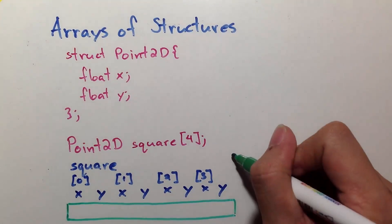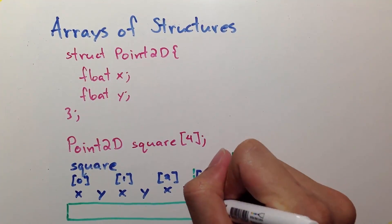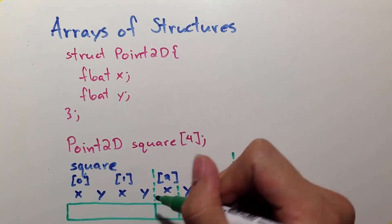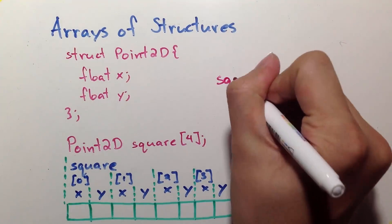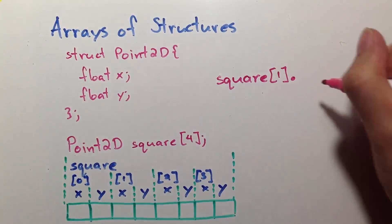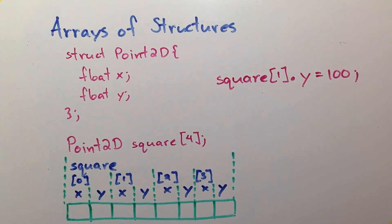Now, which variable are we changing in the following statement? Square[1].y is equal to 100. So, we follow the variable name, square, then access the second child and access the child called y and give it the value of 100.